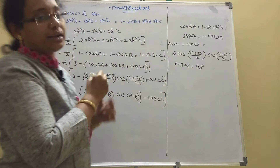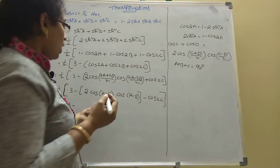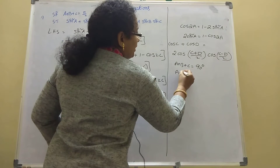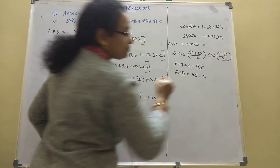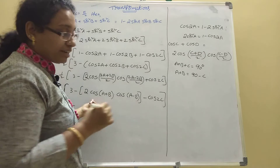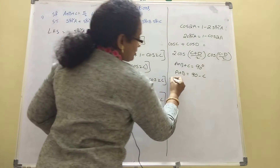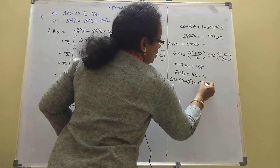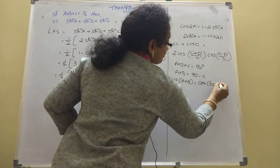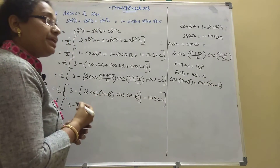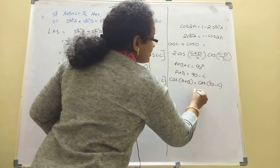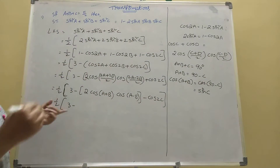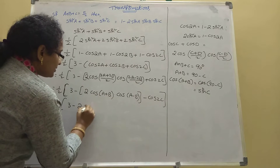Since there is a cos of A plus B, taking cos on both sides: cos(A+B) equals cos(90 minus C), which equals sin C. So write 2 sin C into cos(A minus B).